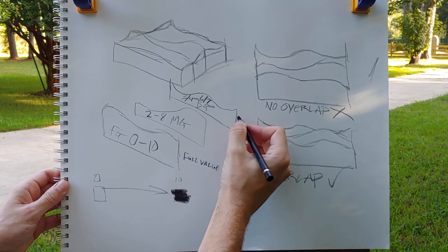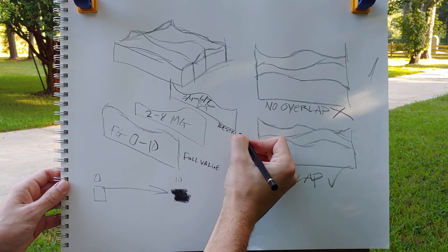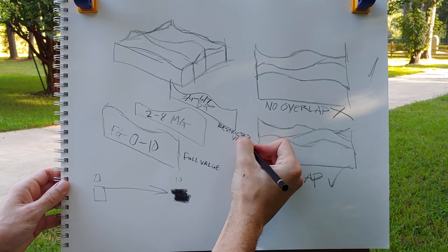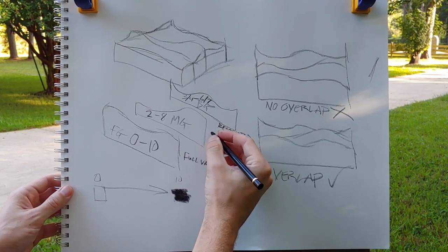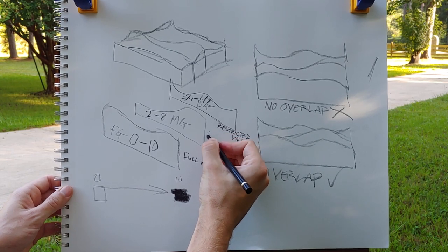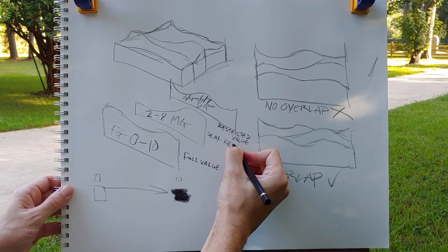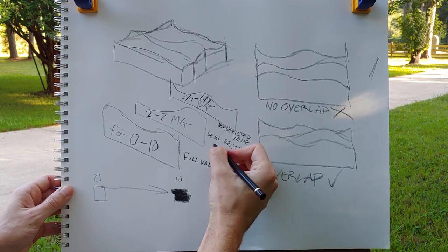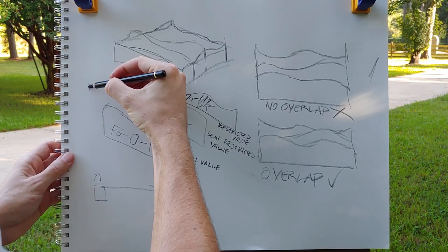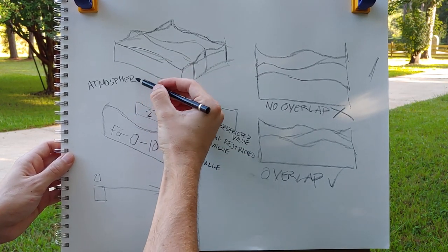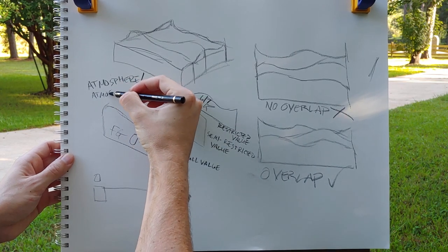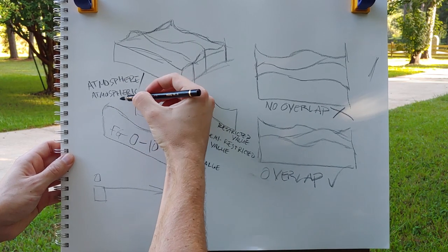In the background, you use a restricted value range. It doesn't necessarily have to be 3 to 6 or 4 to 7, as long as it's narrow. In the middle ground, you use a semi-restricted value range, where you use most, but not all, of the values. That creates what's called atmosphere, or atmospheric perspective. And you've probably heard of those terms before.